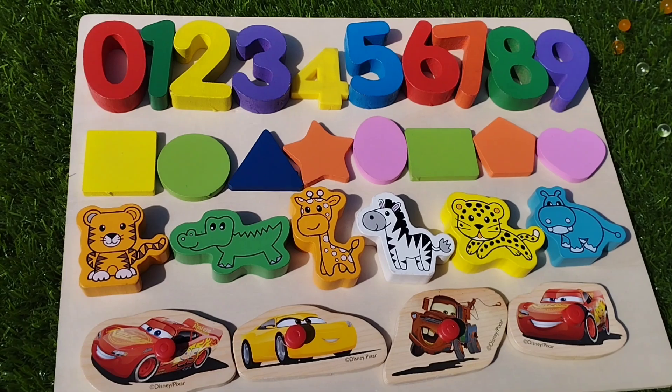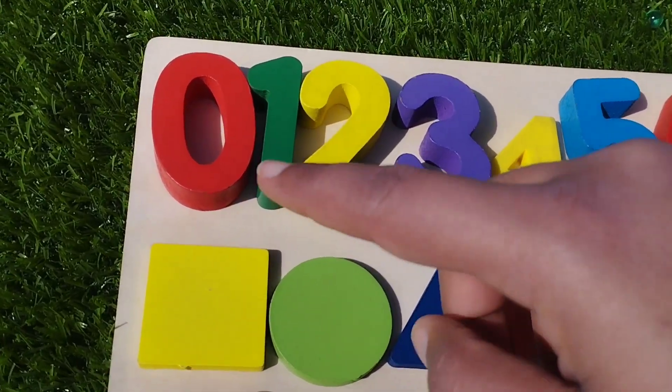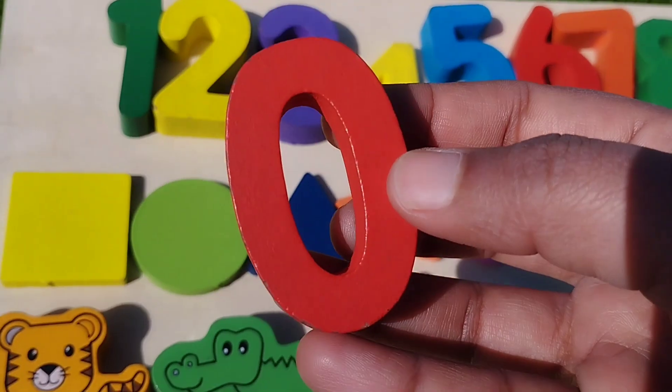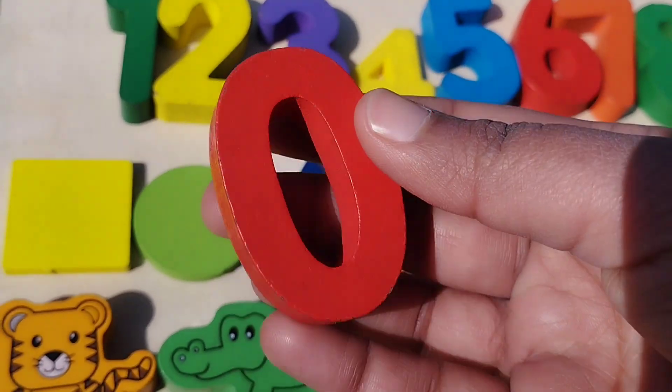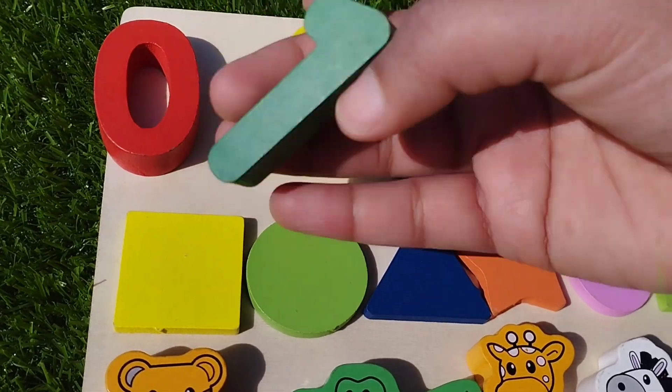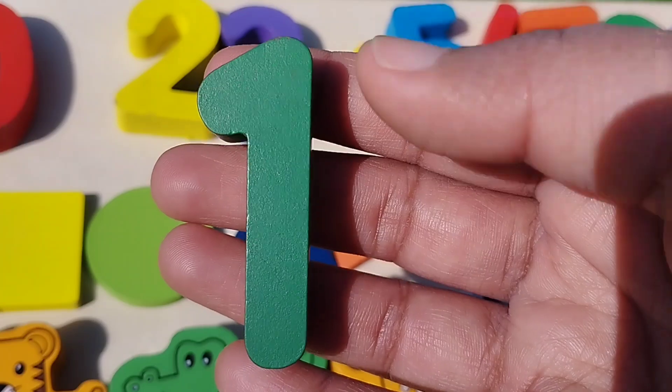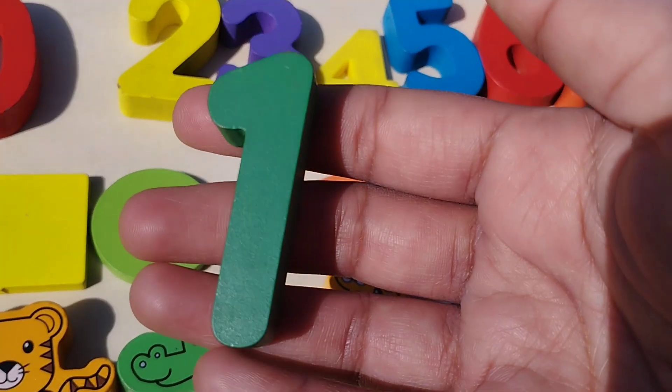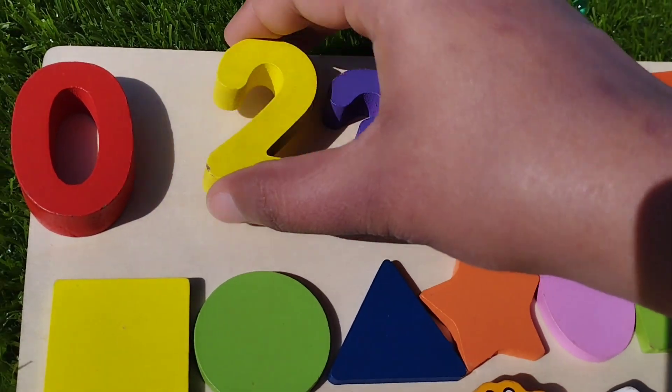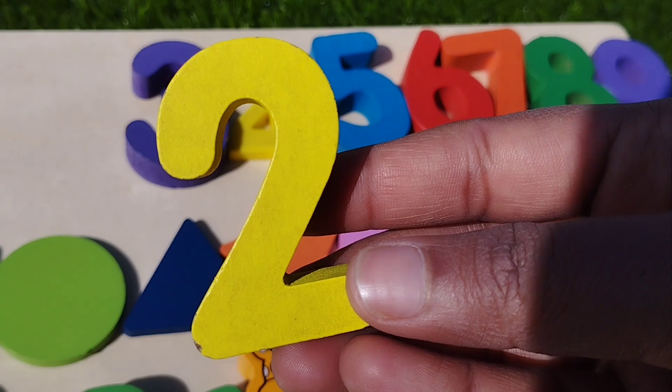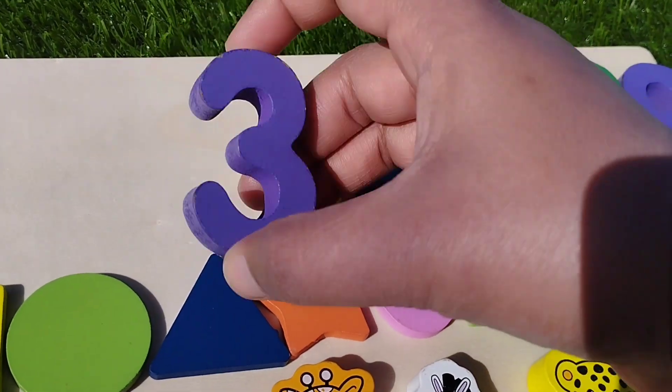The first number is number zero. This is number zero. The next number is number one. This is number one. The next one is number two. This is number two.